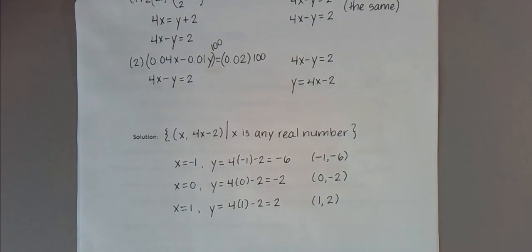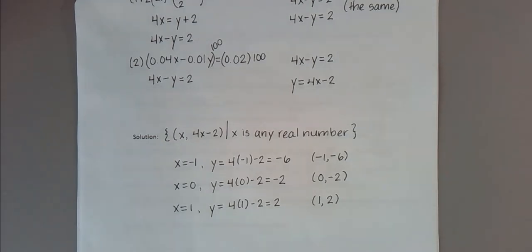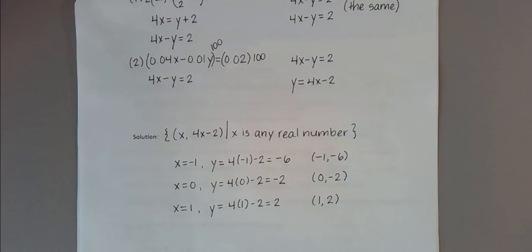That covers all three different situations using both techniques. Substitution is a bit easier when we can isolate a variable with a coefficient of one. Addition or elimination is a better option when isolating a variable is not easy. But ultimately, you can use either method in any situation — it's personal preference. When we have more equations and variables, as in real-world problems, systems become increasingly large and complex. We'll also discuss how to solve a system using matrices in an additional video.